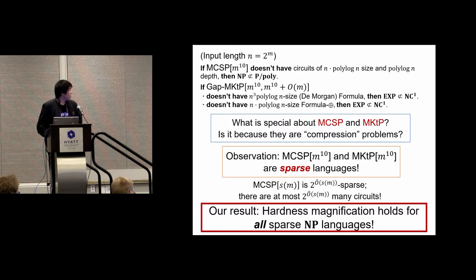Our main result in this paper is that hardness magnification holds not only for sparse MCSP, but for all sparse enough NP languages. That is to say, if we could prove small lower bounds for any sufficiently sparse NP problem, then we could prove super-polynomial lower bounds.